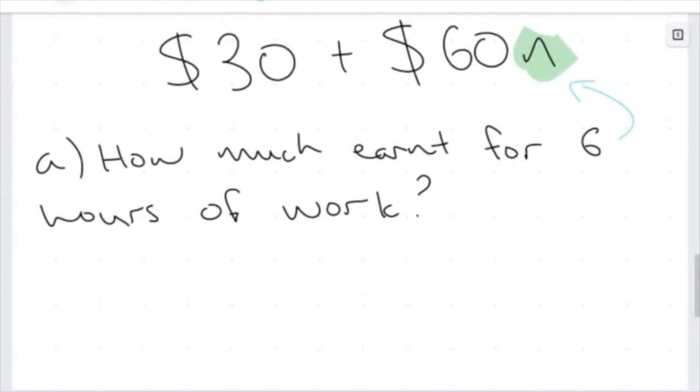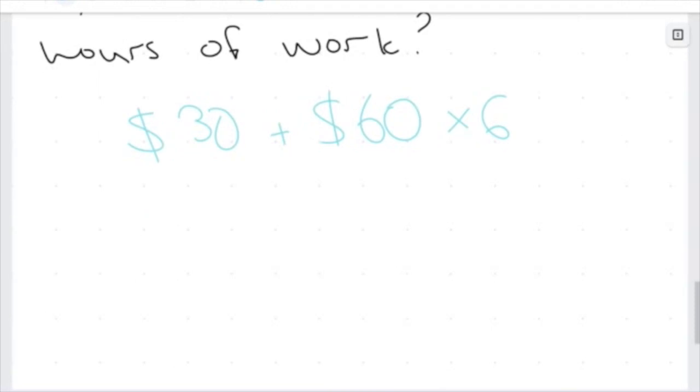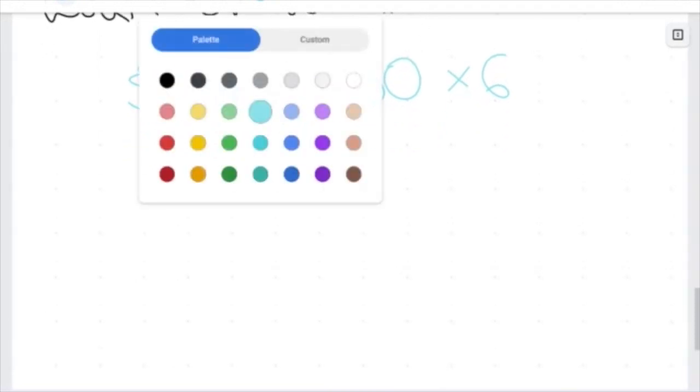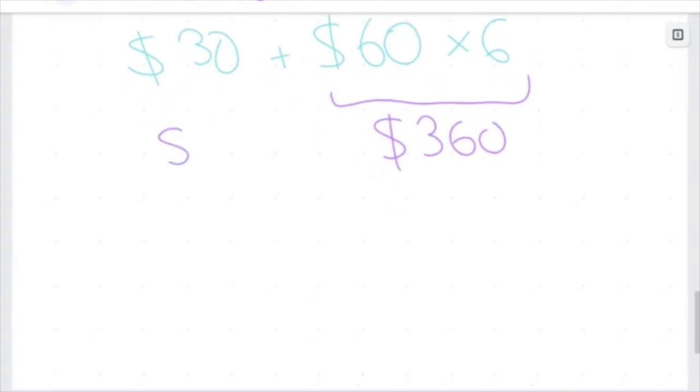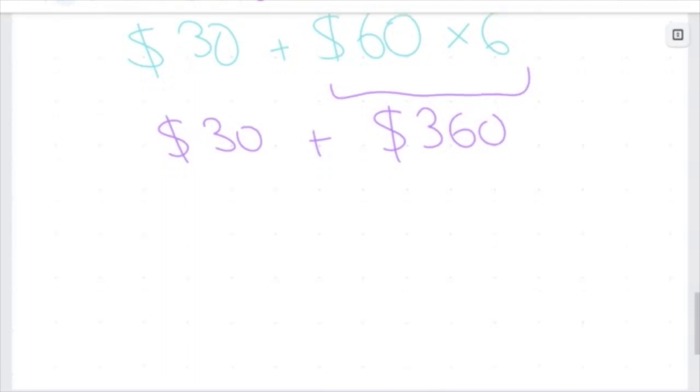So we get my total amount of money the plumber is going to make is going to be 30 plus 60 times 6. So my 60 times 6, that's going to give me $360. And my $30, because we said before, the plumber is going to make $30 regardless. This is just an added cost for the plumber just turning up to your house.